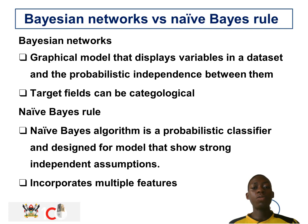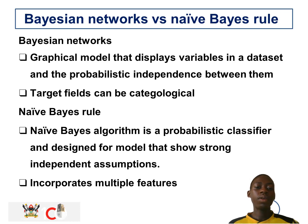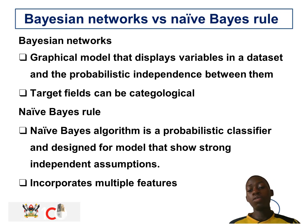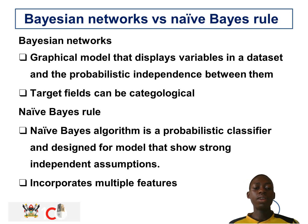The second difference is between Bayesian networks and Naive Bayes. Bayesian networks are graphical models that display variables in a dataset and probabilistic dependencies between them, targeting fields that can be categorical. Naive Bayes is a probabilistic classifier designed for models that show strong independent assumptions, where a condition does not need to depend on another, and it incorporates multiple features.